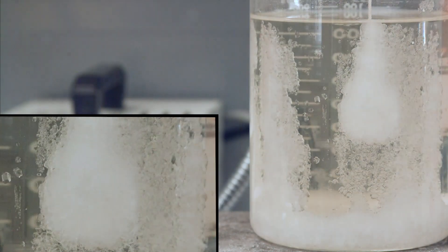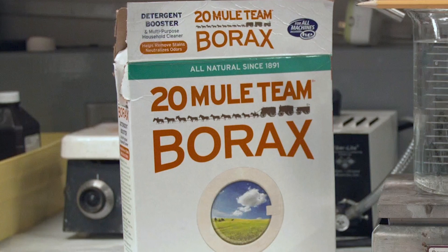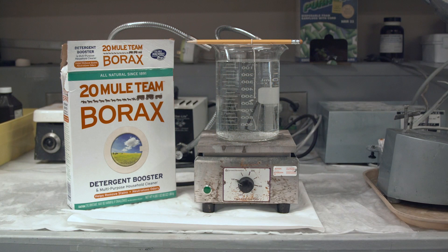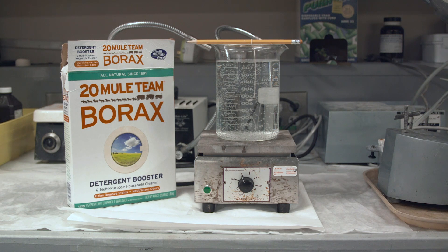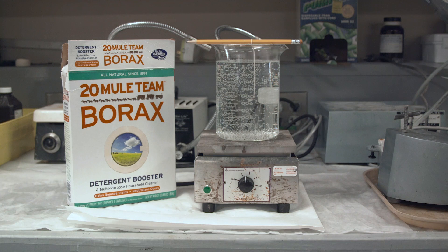What we're going to do is to take borax, which is a product that you can buy at any supermarket, which is a naturally occurring mineral. We're going to go ahead and dissolve it into warm boiling water and then attempt to grow single crystals of it. The borax that you buy at the store is actually ground up little tiny pieces of crystalline material that we call polycrystalline material.